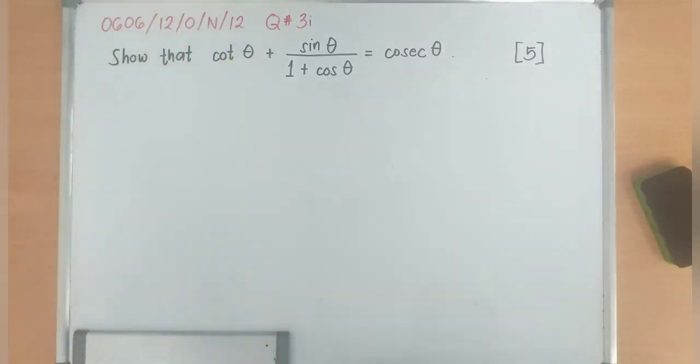And remember, cotangent is the reciprocal of tangent theta. And tangent theta is very popular to be equivalent to sine over cosine. And the reciprocal of sine over cosine is cosine over sine.